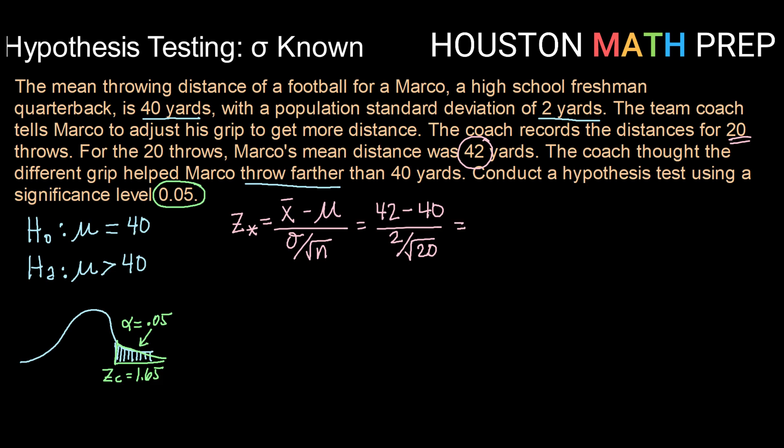Using your calculator to calculate that, we get a Z star of 4.47, or a Z-score for a mean of 42 of 4.47.